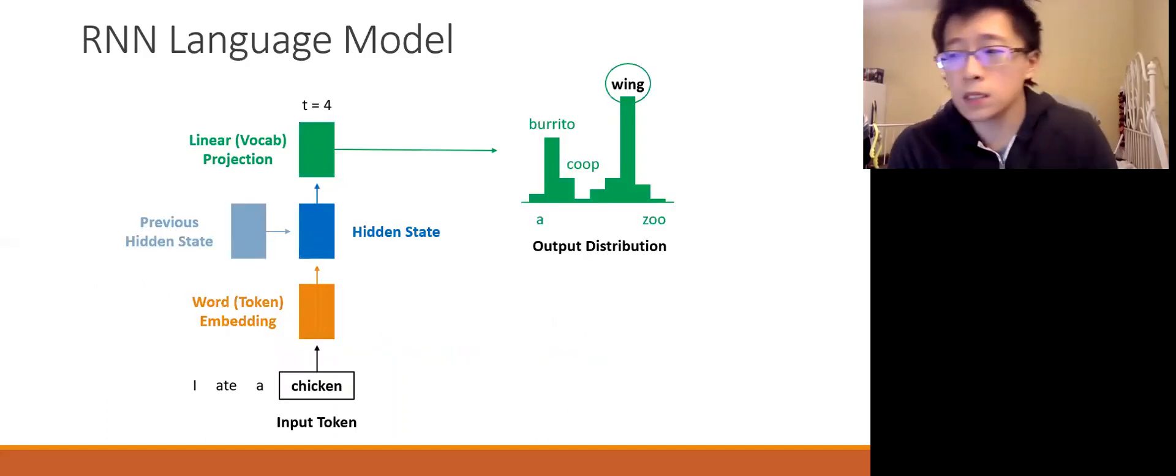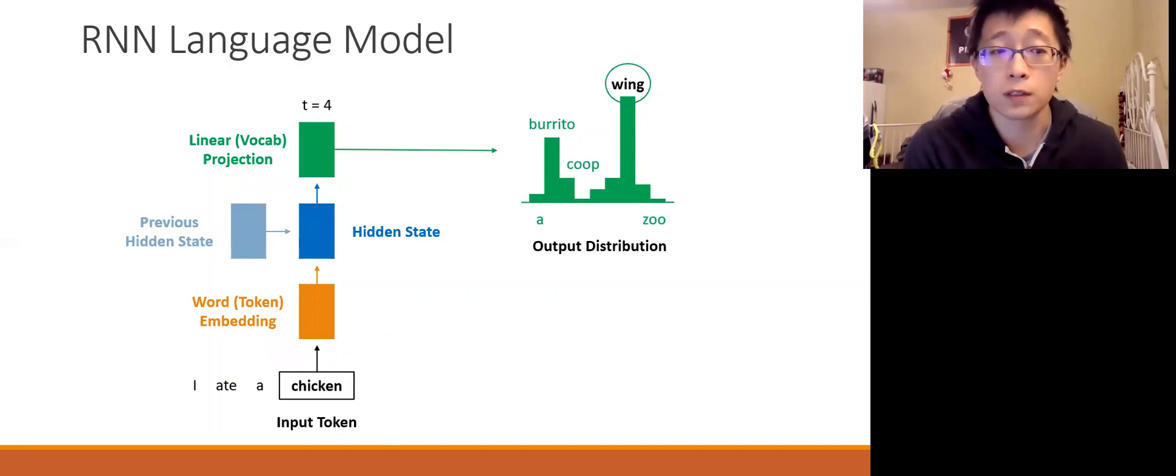So this is what the architecture of an RNN looks like. At a given time step your input token, here it's chicken, is embedded into a vector via a word embedding.